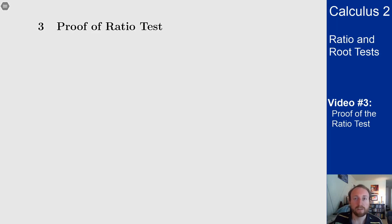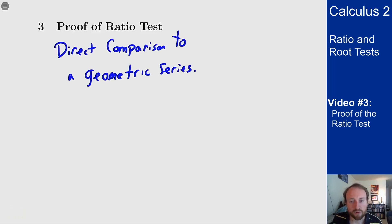Like mentioned previously, the idea of this proof is that we're doing direct comparison to a geometric series. And why should we think to do this? Well if we look at the limit we're trying to compute for the ratio test, if this quotient inside the limit was always ρ...